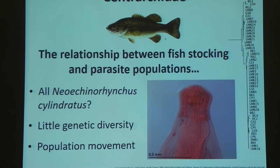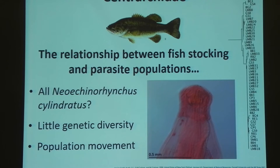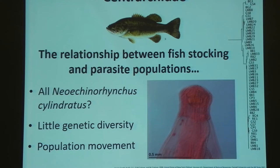We do wonder: is some of this the relationship between fish stocking and parasite populations? Because as you move fish hosts around, you're moving those parasites with them. Because Neokinorhynchus doesn't really cause that much damage to the host, you're not seeing an illness — so it's not going to bar people from moving fish around to different water bodies. Since we see so little genetic diversity within Centrarchid worms across the eastern half of the United States, we wonder if maybe it's because these parasite populations have been mixing so much that there's not much recognizable diversity, even across such a large geographic range.